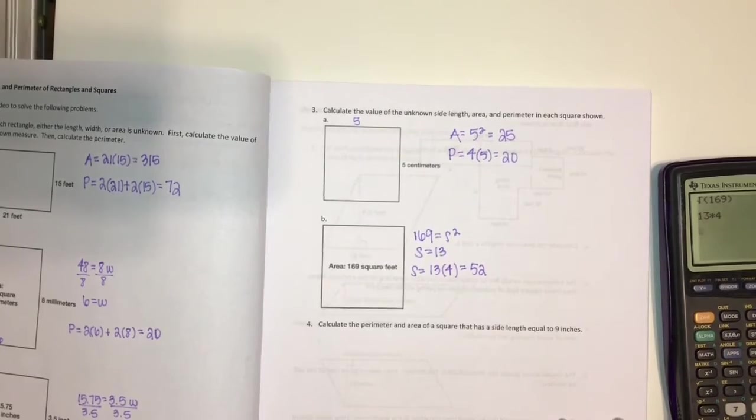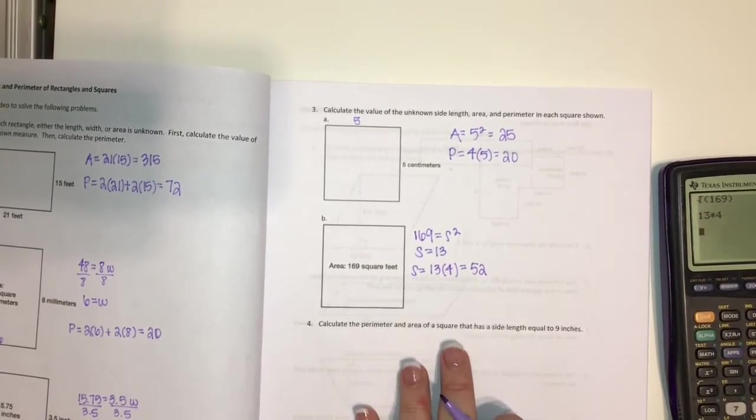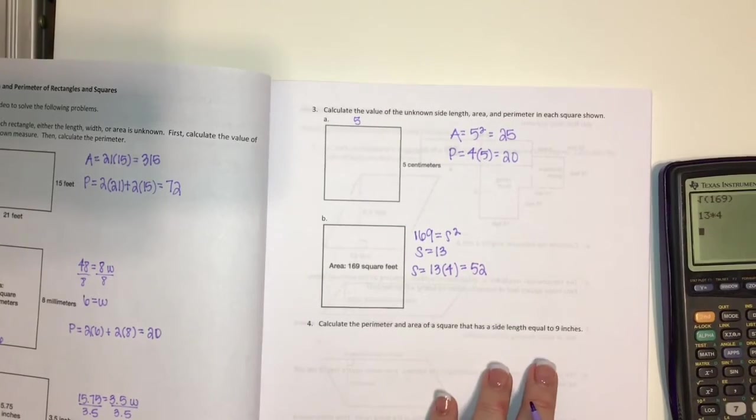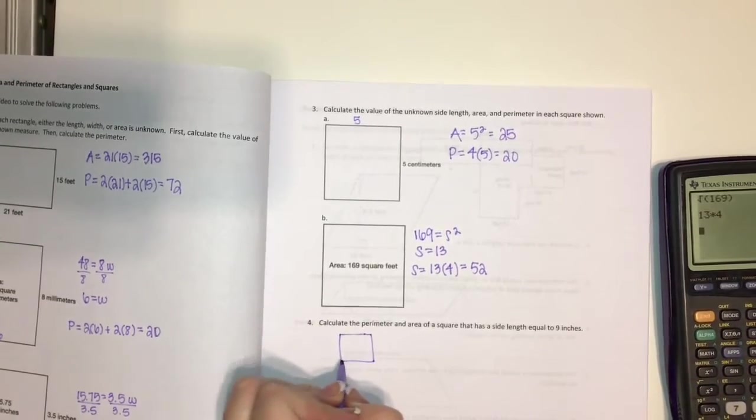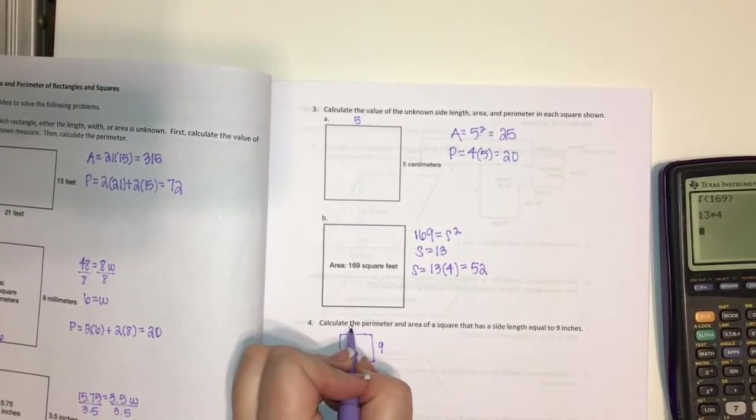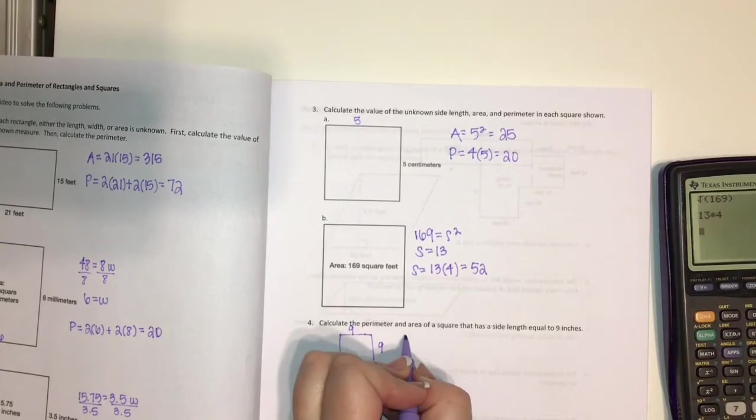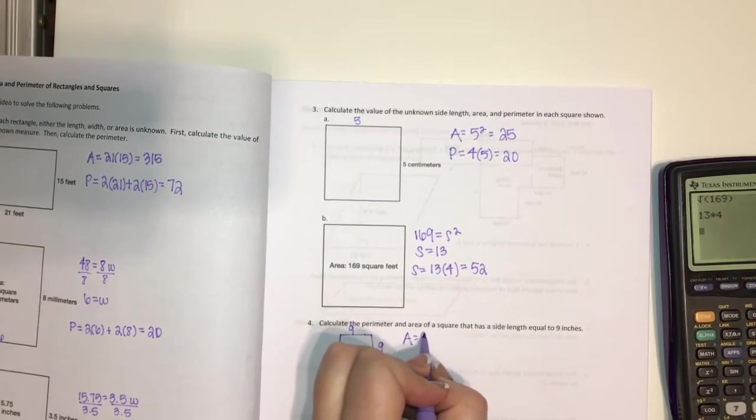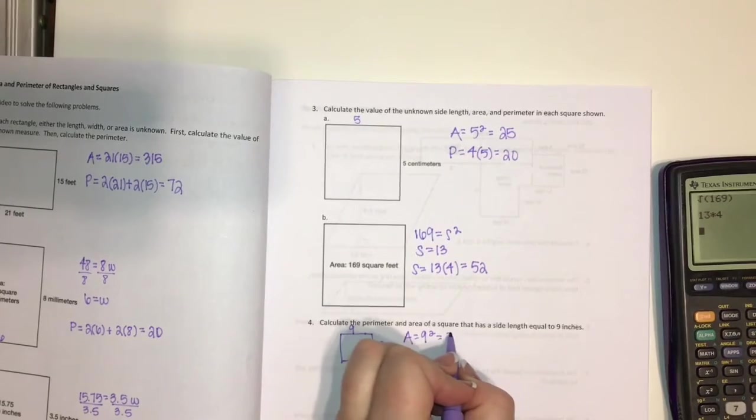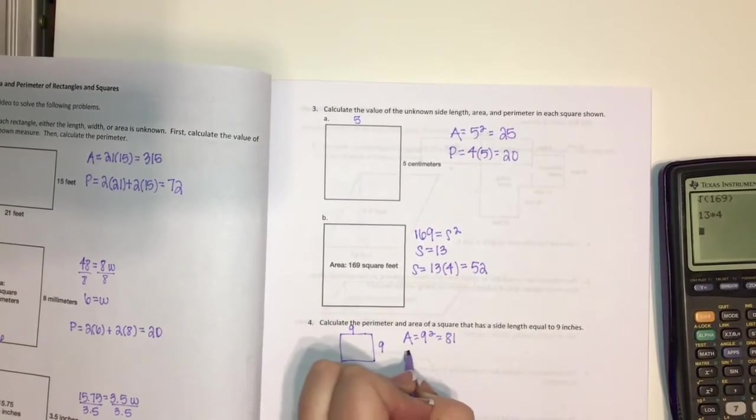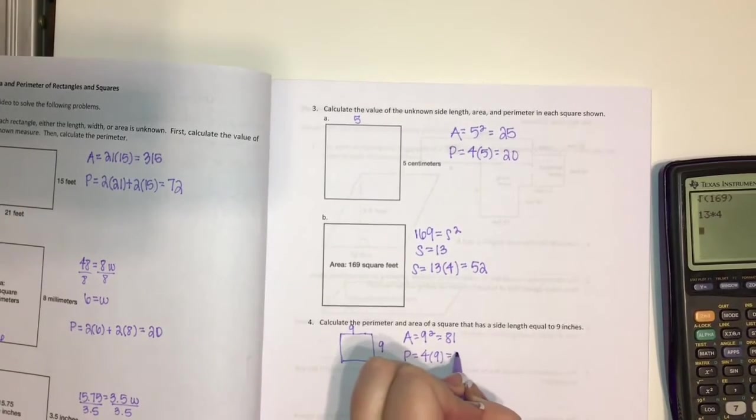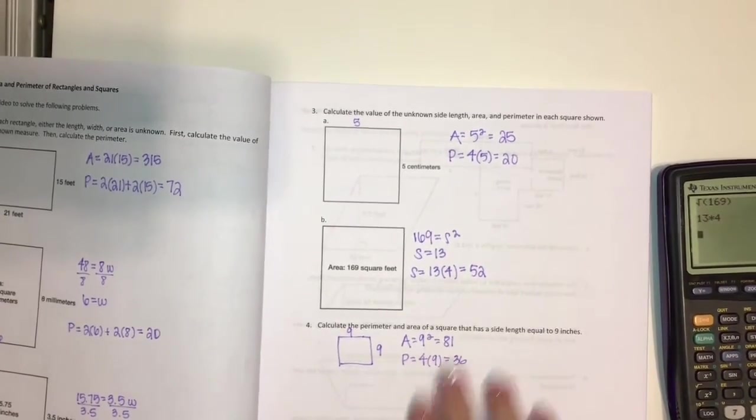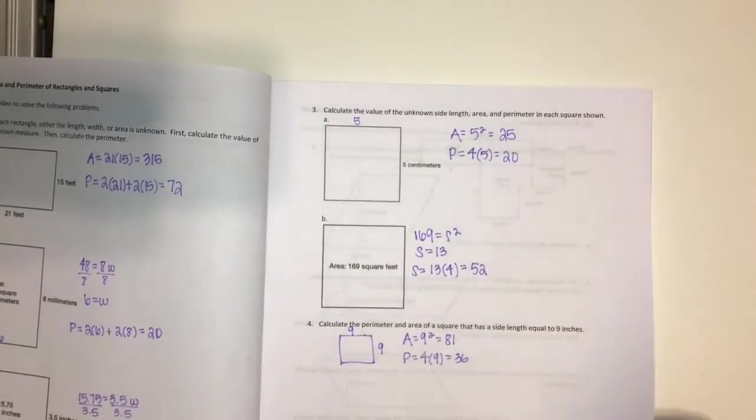Now it says calculate the perimeter and area of a square that has a side length equal to 9 inches. Again, we're just going to sketch a little picture. So that's 9 and that's 9. So my area is going to be 9 squared. Well, that's just 81. And my perimeter is going to be 4 times 9, which is going to be 36. So once we have the picture, that makes our life much easier.